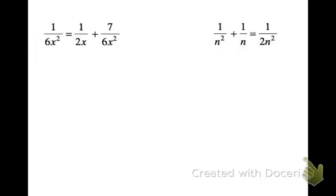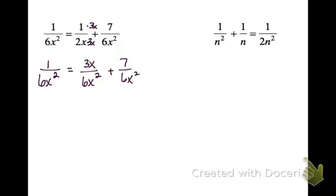On this next problem, our denominators are 6x squared, 2x, and 6x squared. I know that if I take 2x and multiply it by 3x, I'll get 6x squared. So I'm going to multiply this fraction, top and bottom, by 3x. Rewriting the whole thing, I have 1 over 6x squared equals 3x over 6x squared plus 3x. Now I have all the same denominators. Setting my numerators equal, subtract the 7 and divide by 3, I get x equals negative 2.